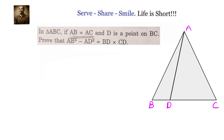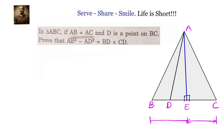If we drop a perpendicular from A, it will divide the opposite side into two equal parts. We will drop a perpendicular from A onto BC and name the point E. We know that BE equals CE — if BE is X then CE is also X.